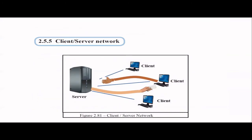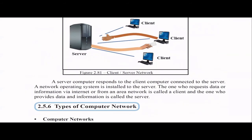Then comes the client-server network. In the network, we have a server — a more powerful machine. When a client sends a request to the server, the server responds back. A network operating system is installed on the server, which has powerful, fast resources. Client machines are the ones that request data or information, and the server provides it. Clients don't need very powerful resources, but the server is usually a powerful machine.